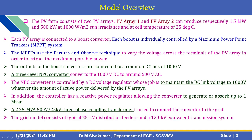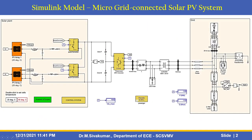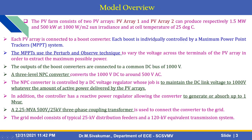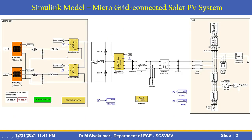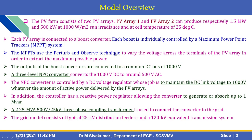The PV farm consists of 2 PV arrays: PV array 1 and PV array 2. They can produce respectively 1.5 MW and 500 kW at 1000 W/m² solar irradiance at cell temperature of 25°C or 45°C. Each PV array is connected to a boost converter — boost converter 1 and boost converter 2 — each individually controlled by a maximum power point tracker system.